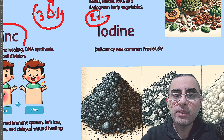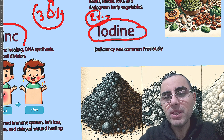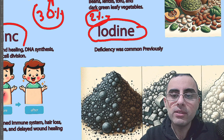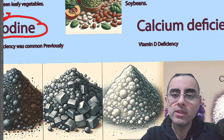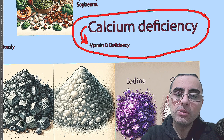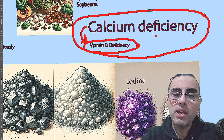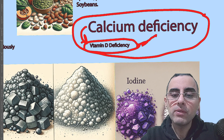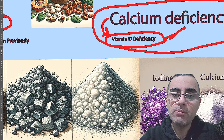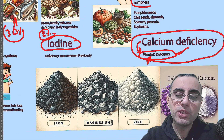Another important mineral is iodine, but iodine deficiency is rare nowadays. In most countries, the salt you eat is iodized, so iodine deficiency is not a common problem. Calcium deficiency is also very common, but it is usually due to vitamin D deficiency. You may intake enough calcium, but without sufficient vitamin D, you can still have calcium deficiency. Vitamin D supplementation or vitamin D-containing foods are the solution.